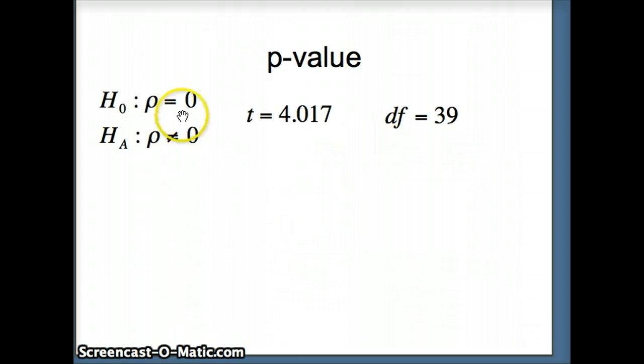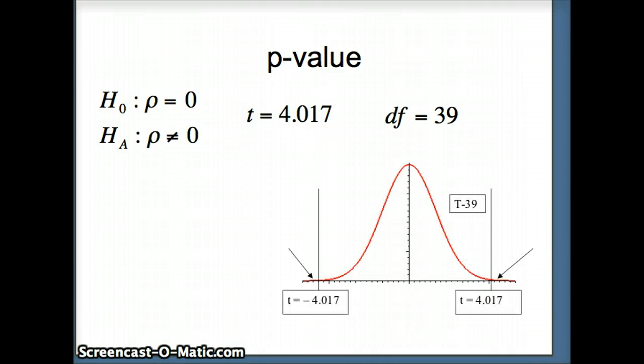It's a two-tailed test. Rho equals 0 versus Rho doesn't equal 0. So we're going to find our area to the right of 4.017 and to the left of negative 4.017. So our P value will give us these two areas.